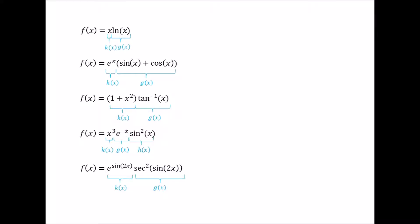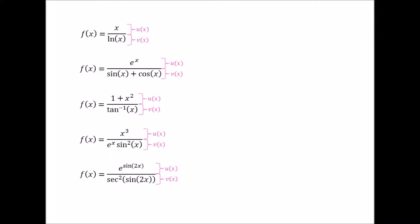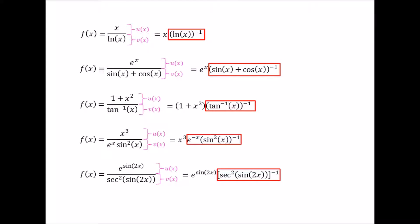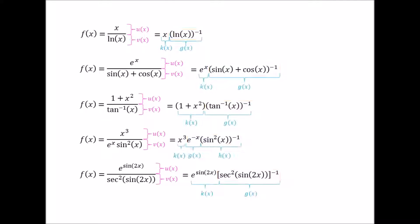But now, let's say instead that we have functions that are the quotient of separate functions — u of x on top and v of x on the bottom. How do we find their derivative then? Well, we can still use the product rule, because if you treat all the functions in the denominator, or all the v of x, as functions in the numerator raised to the negative one power, then the overall function f of x becomes a product.